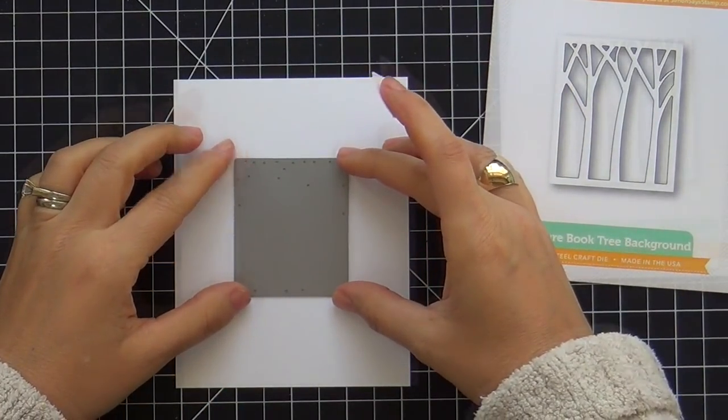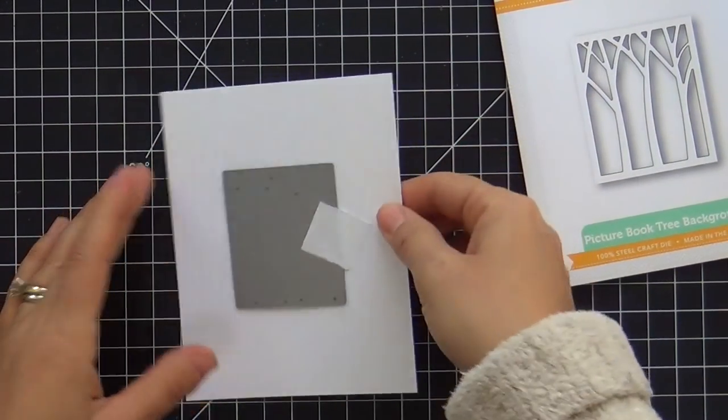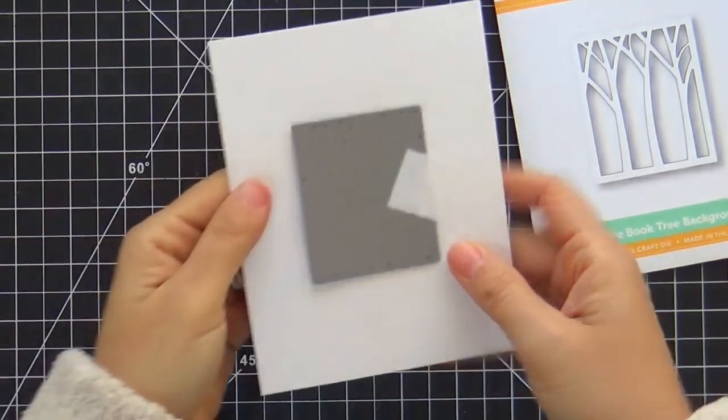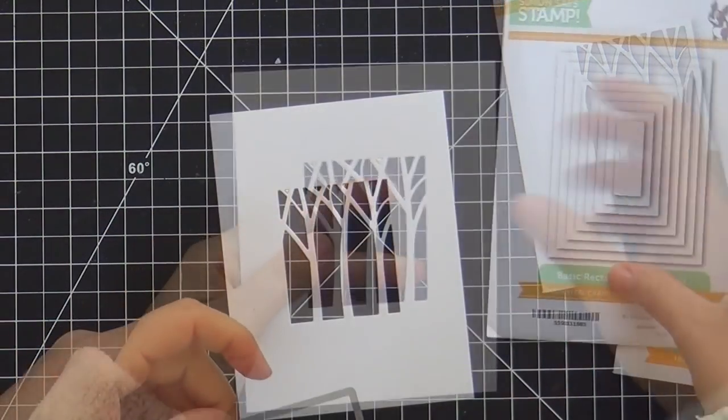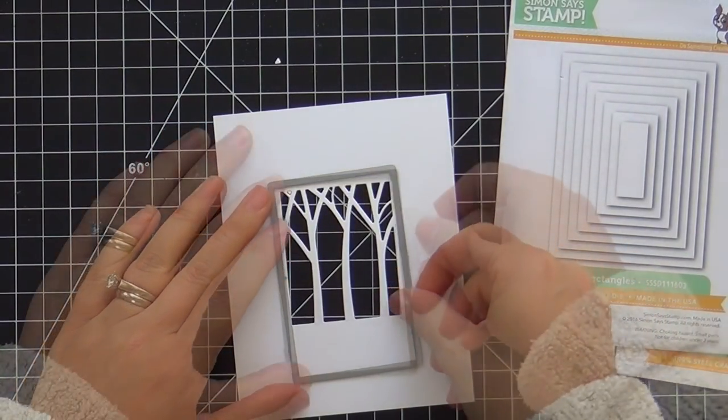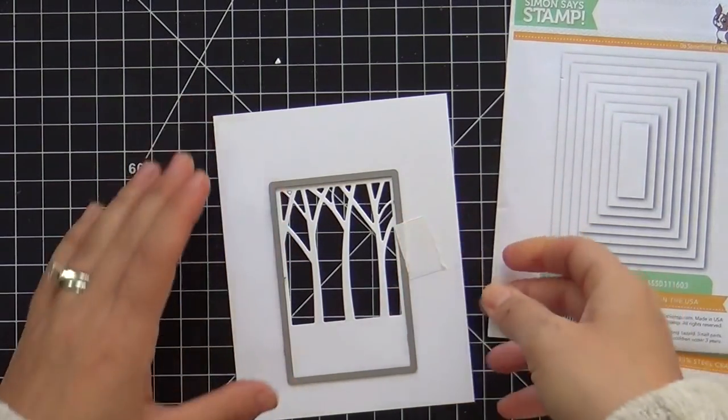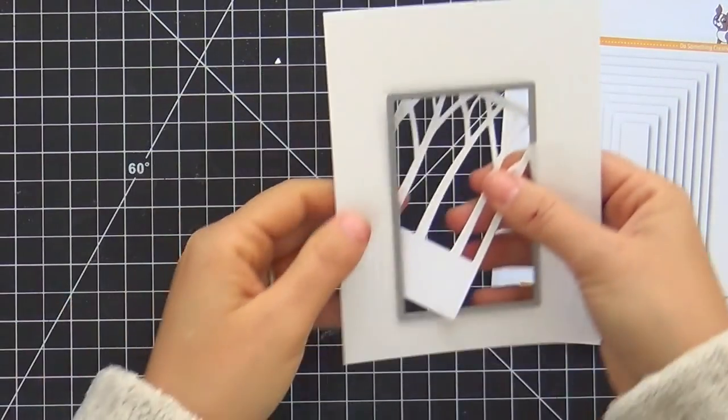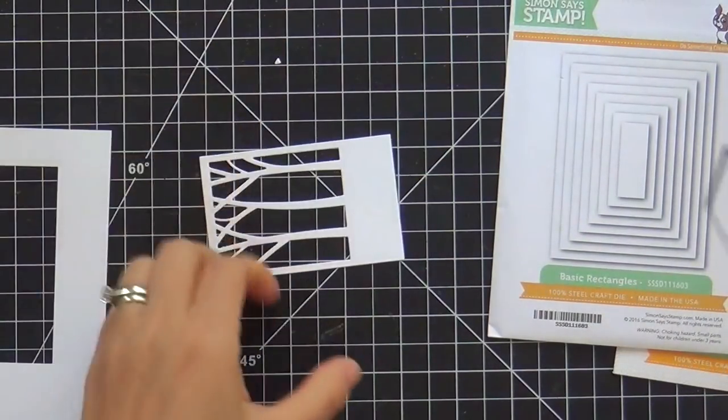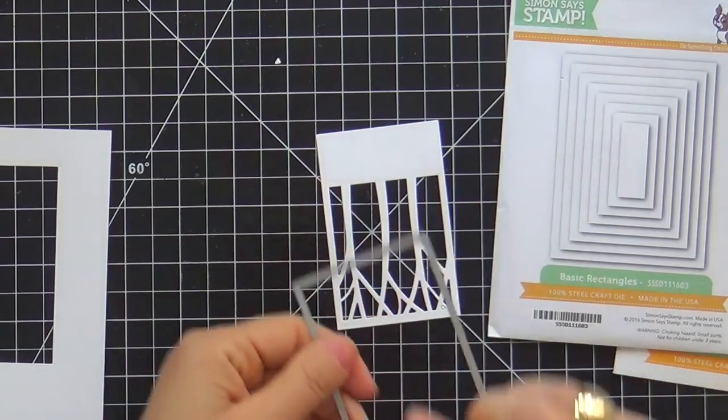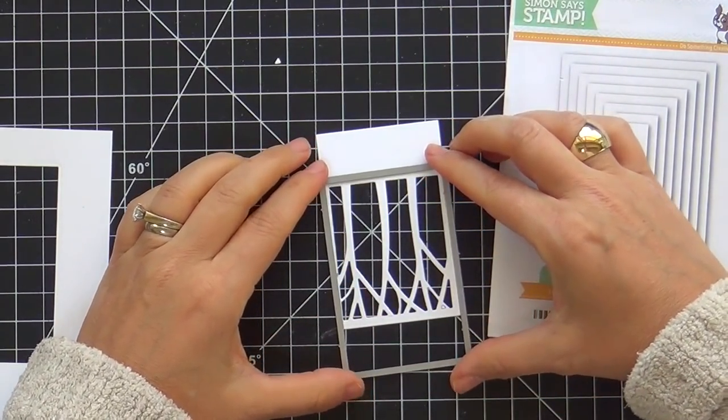So now moving on to the second card I'm using the picture book tree background die. I'm going to do the same thing I did on the first card. So I die cut that. Now I'm taking one of the nested rectangle dies because I wanted to die cut this out but I didn't have the perfectly sized rectangle.